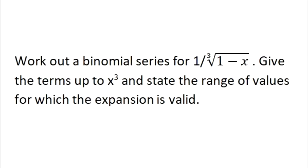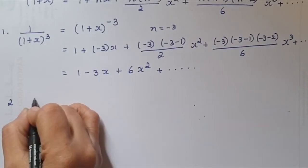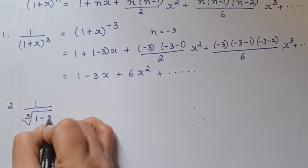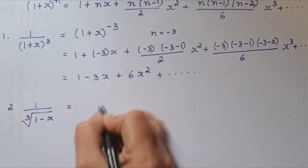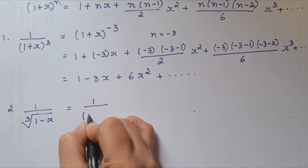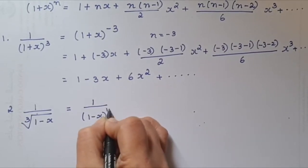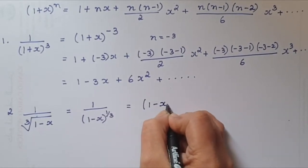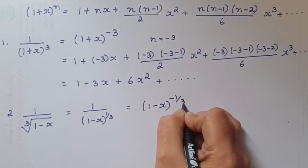Second question: work out a binomial series for 1/∛(1 − x). Give the terms up to x³ and state the range of values for which the expansion is valid. This can be written as 1/(1 − x)^(1/3), which we then take to the numerator as (1 − x)^(−1/3).